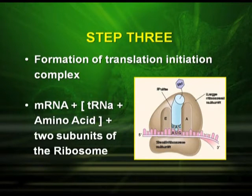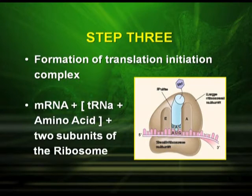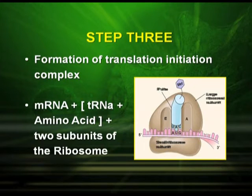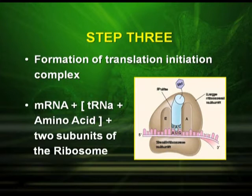Step three is the formation of the translation initiation complex: mRNA plus tRNA plus amino acid plus the two subunits of the ribosomes. As clearly seen in the picture, the small subunit and large subunit of the ribosomes come together with the mRNA, the initiating codon AUG, the tRNA having the anticodon UAC, and the initiating amino acid methionine.